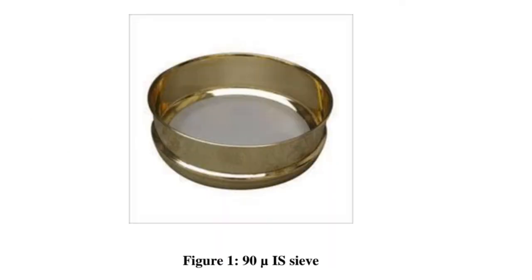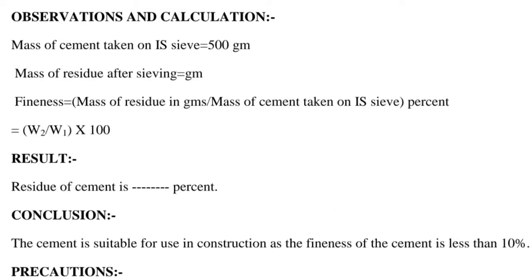The figure shows the 90 micron IS sieve. Observations and calculation: mass of cement taken on IS sieve is equal to 500 grams; mass of residue after sieving is W2. Fineness equals mass of residue in grams divided by mass of cement taken on IS sieve, expressed as percent: fineness = (W2 / W1) × 100. Result: residue of cement in percent. Conclusion: the cement is suitable for use in construction as the fineness of cement is less than 10 percent.